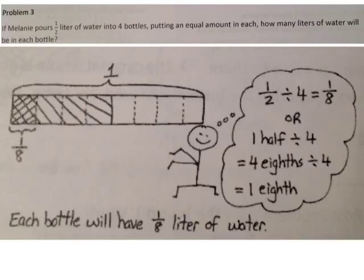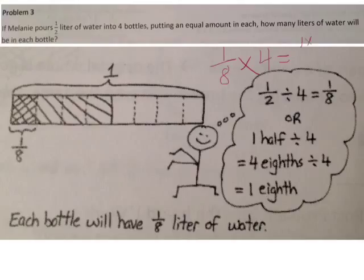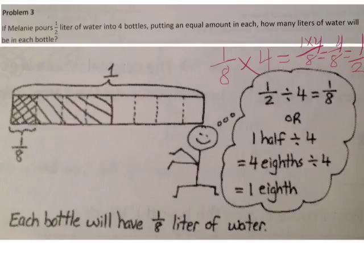Remember, we can check our division with multiplication. I can multiply my quotient, one-eighth, times four, my divisor. That would give me one times four over eight, which gives me four-eighths, which equals one-half. So I can multiply my quotient times my divisor and get the dividend that I started with. One-eighth times four equals one-half, so one-half divided by four equals one-eighth.